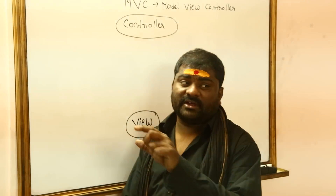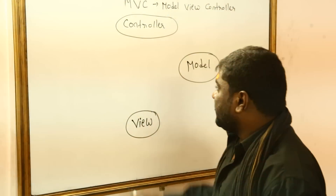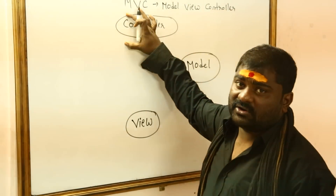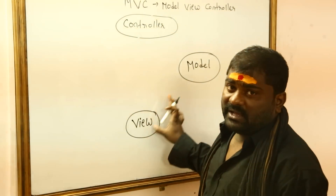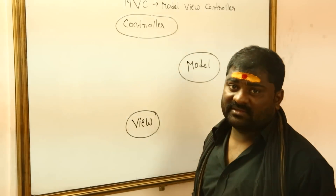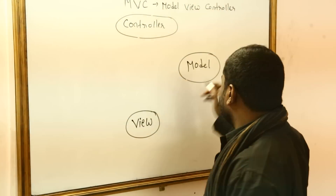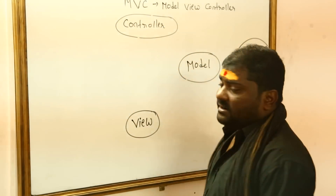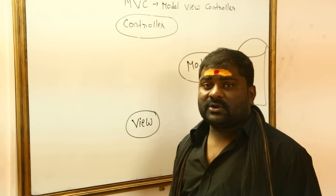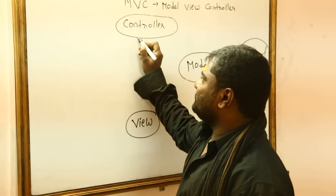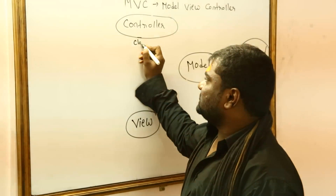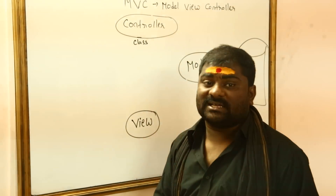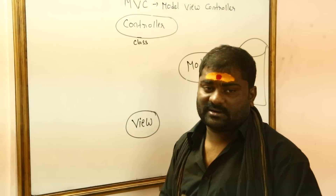When you work with MVC you can see three components: one is controller, another is view, and another is model — you can find three folders. You can also consider your database. Controller is nothing but a class — any class that is inheriting from the Controller class is called a controller.